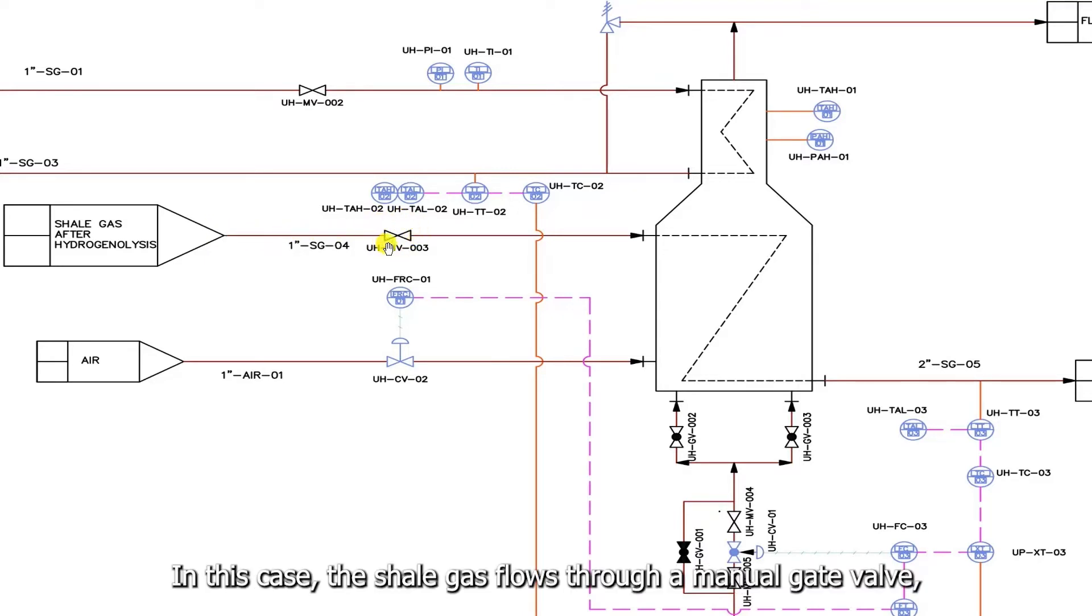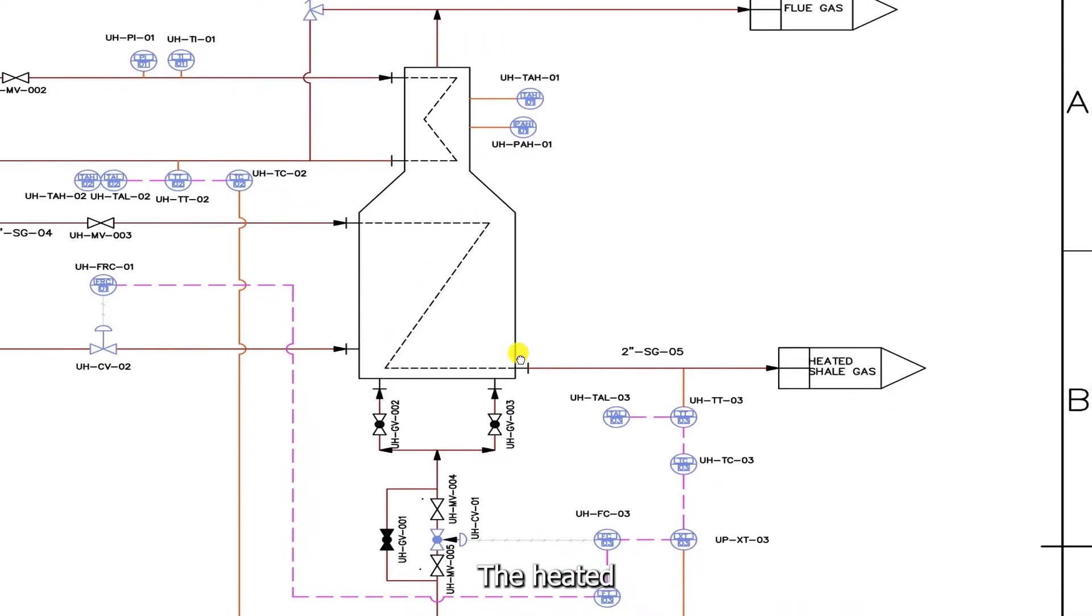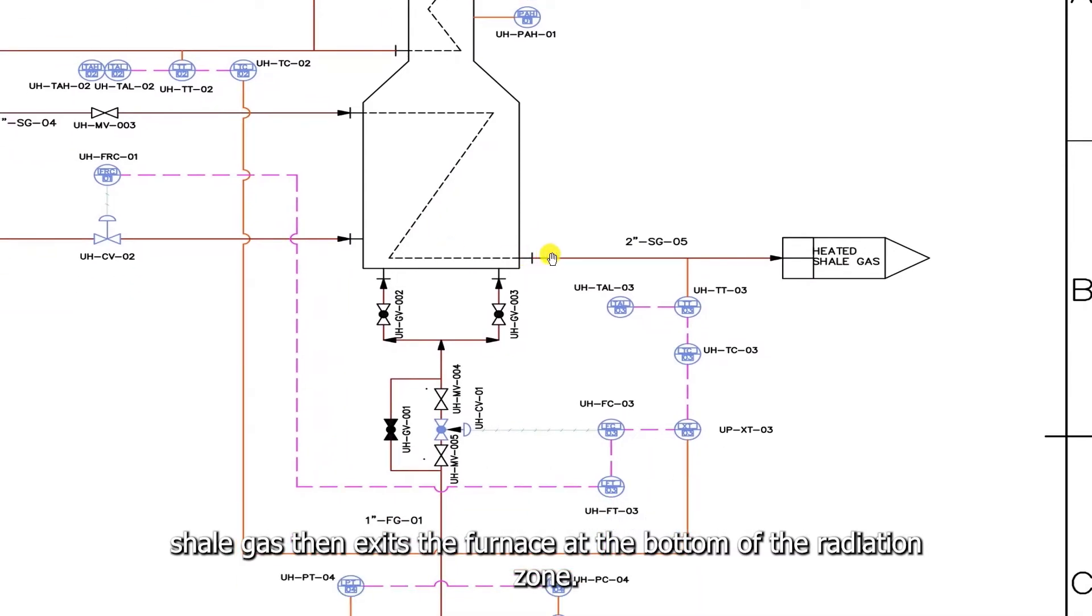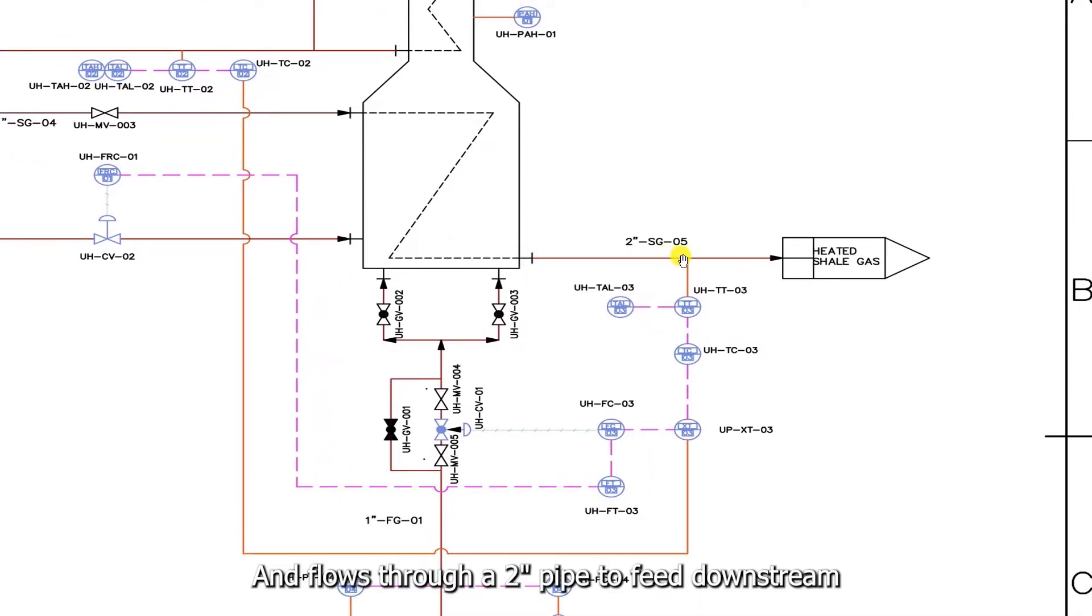In this case, the shale gas flows through a manual gate valve, then enters the furnace at the top of the radiation zone. The flow path of the gas inside the furnace is depicted here. The heated shale gas then exits the furnace at the bottom of the radiation zone and flows through a two-inch pipe to feed downstream equipment.